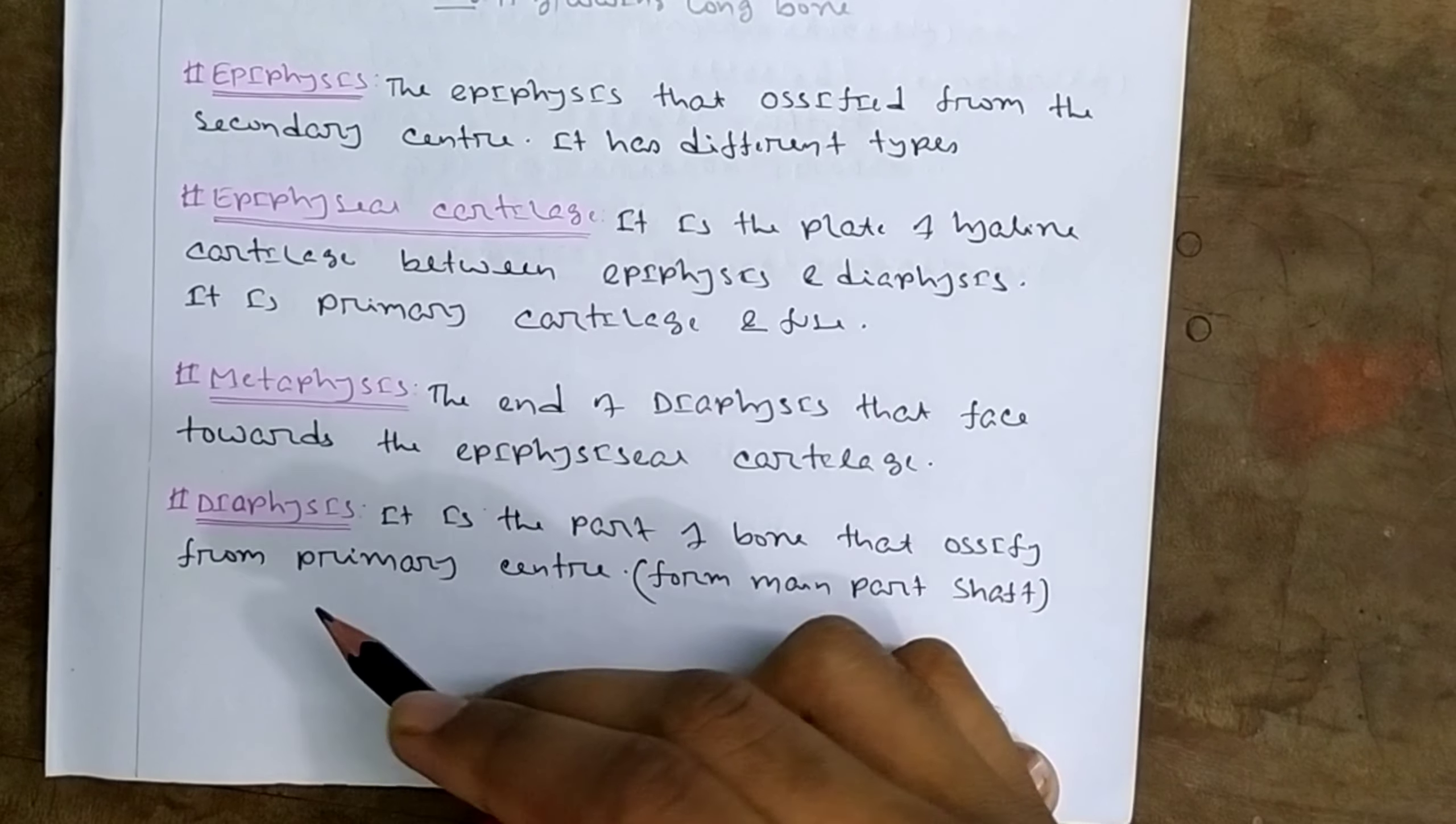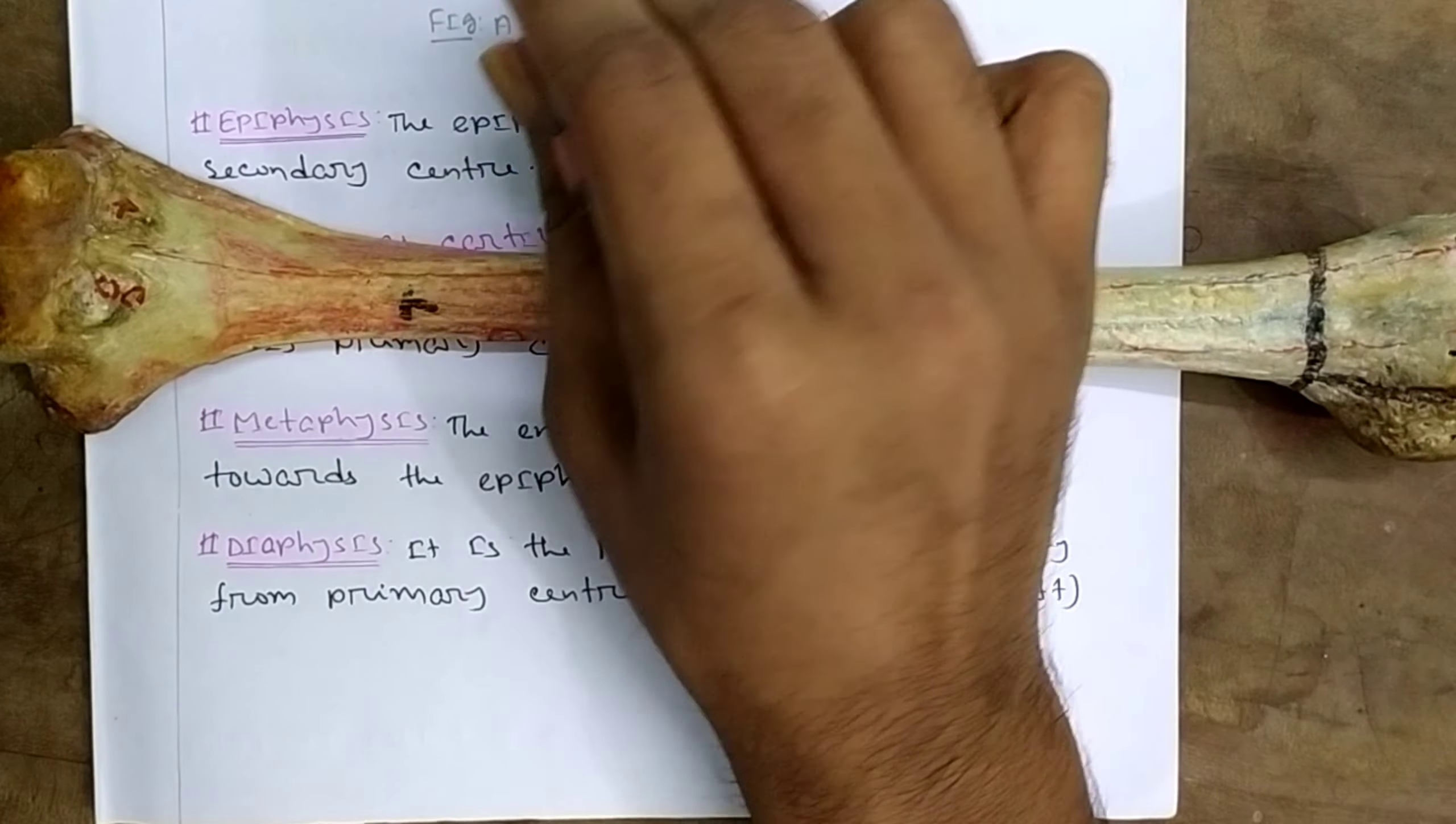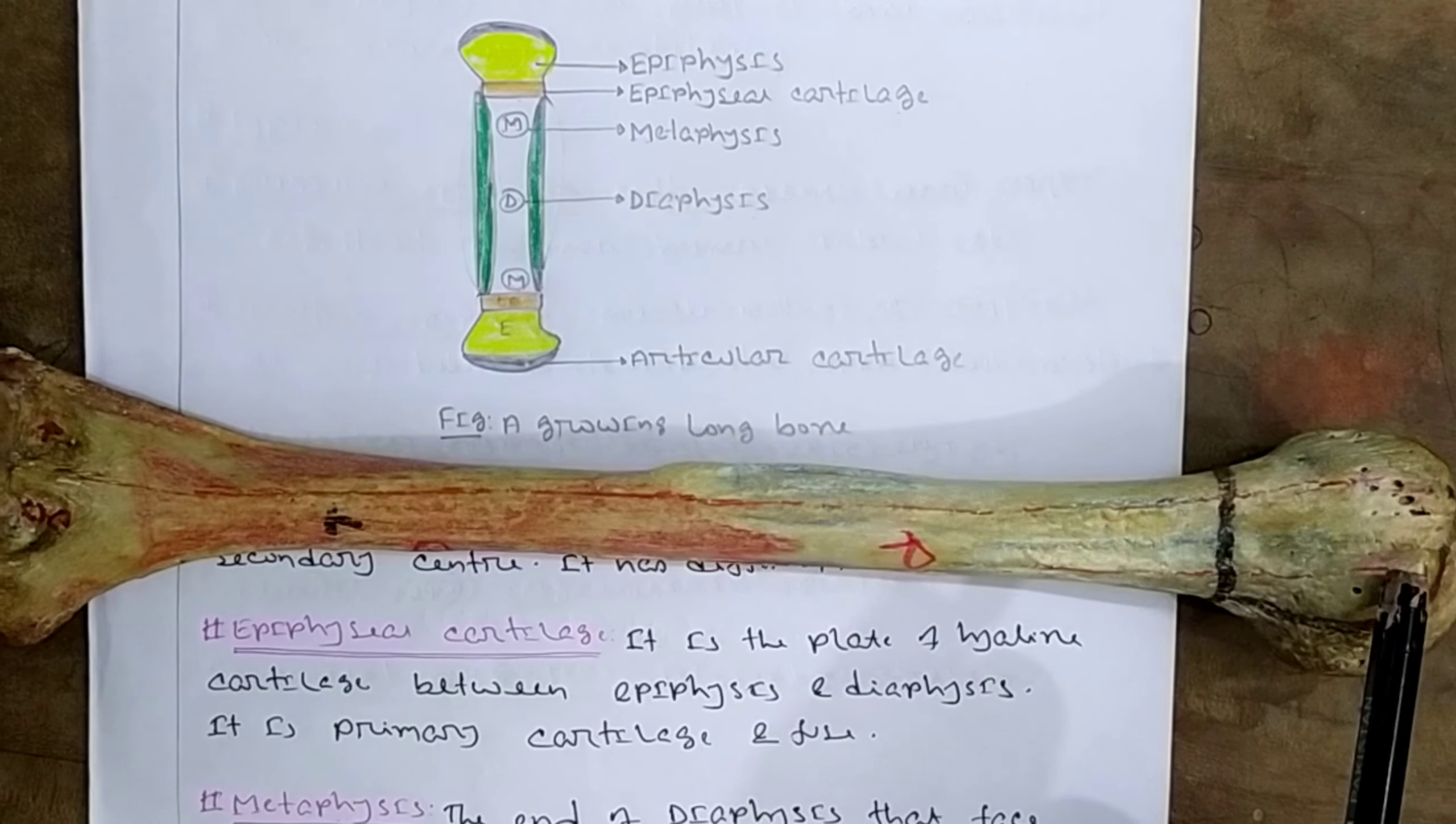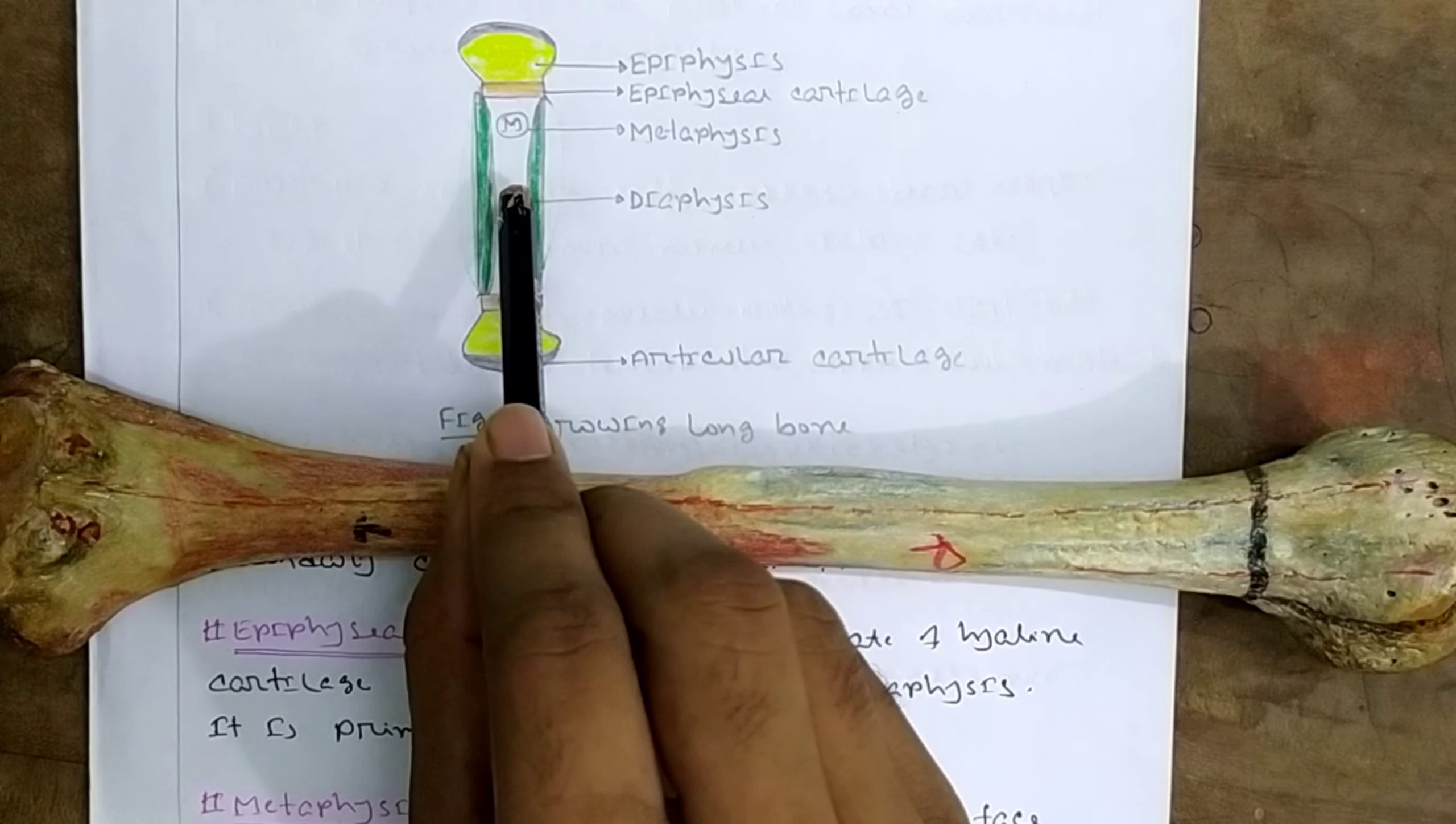In a growing long bone, the upper and lower ends are ossified from the secondary center. These appear later as the epiphysis, both upper and lower epiphysis.